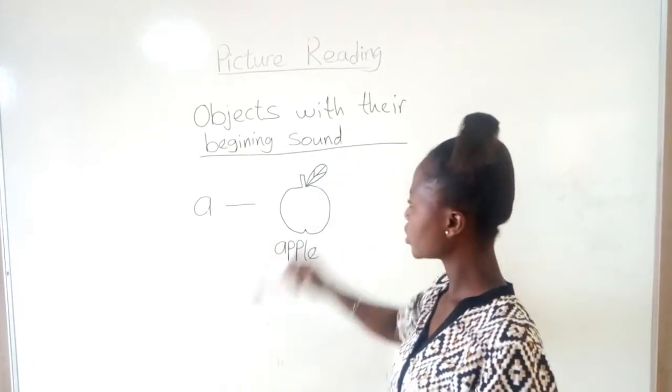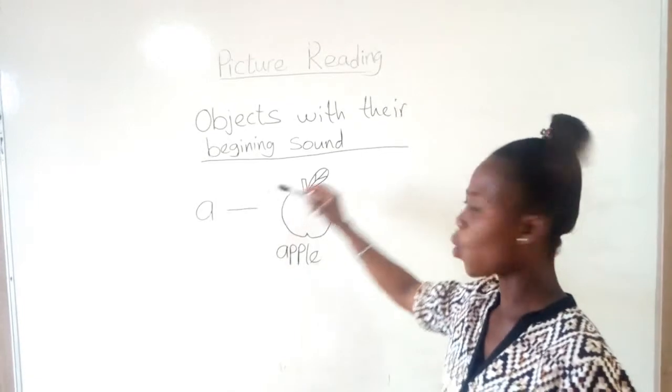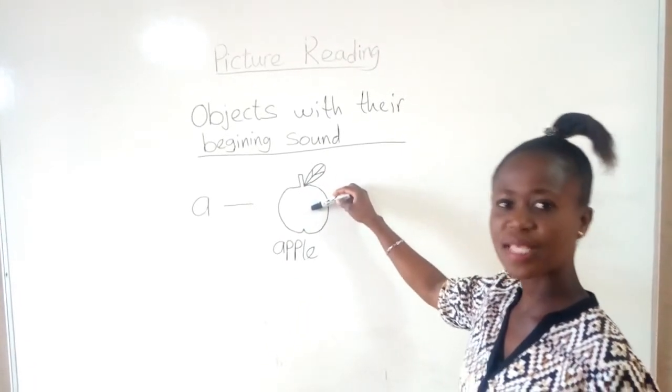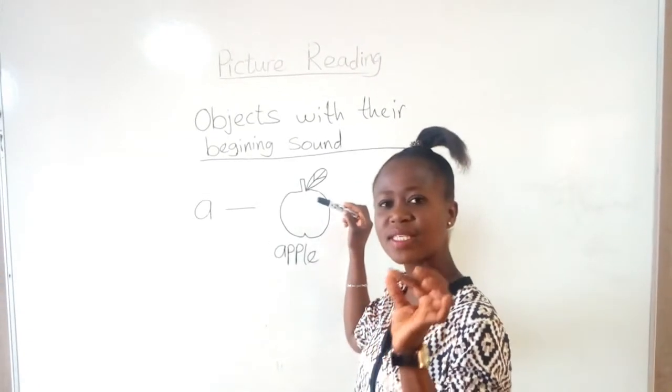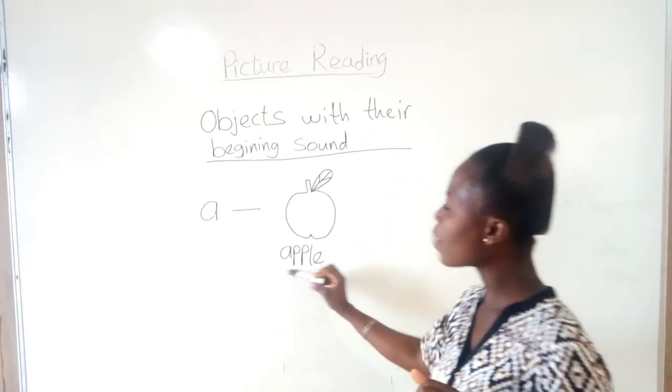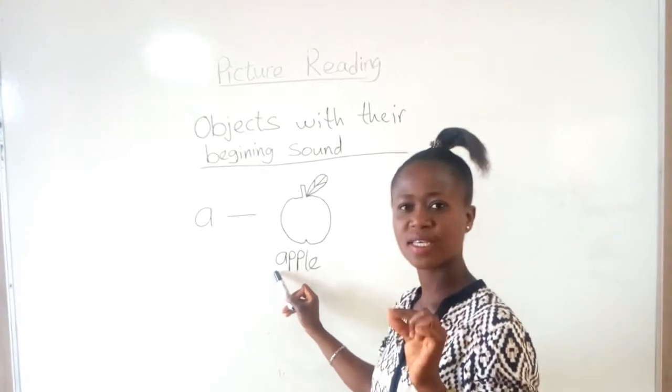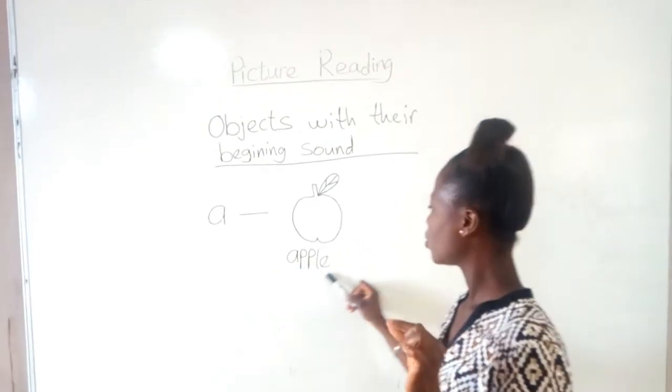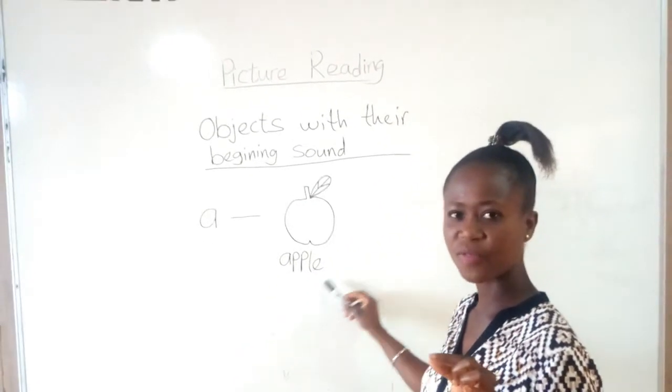Very good. So the letter or the sound for apple is a. So the beginning sound for apple is a. Before you say apple, you have to say a first before you mention the rest of the letters.